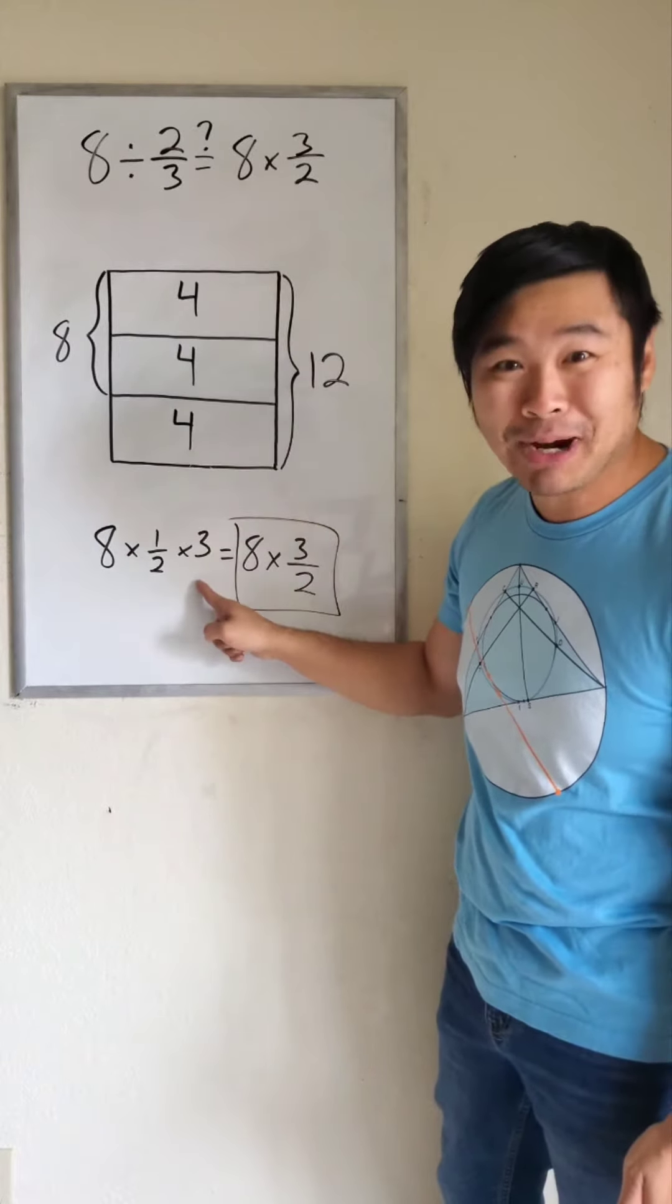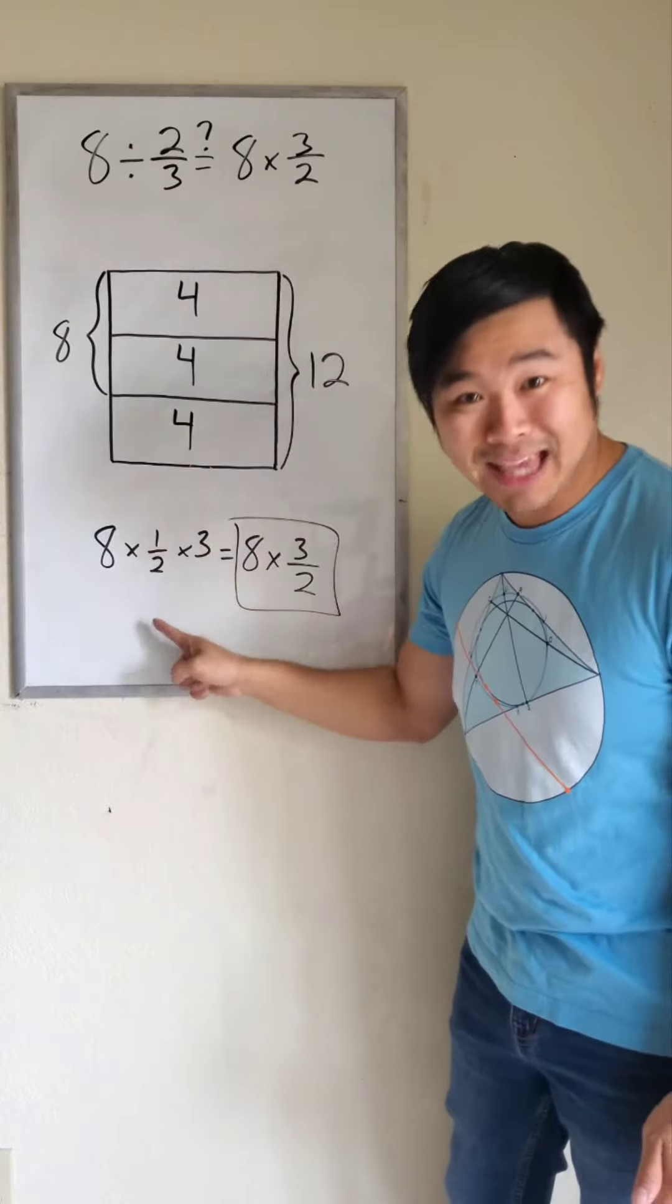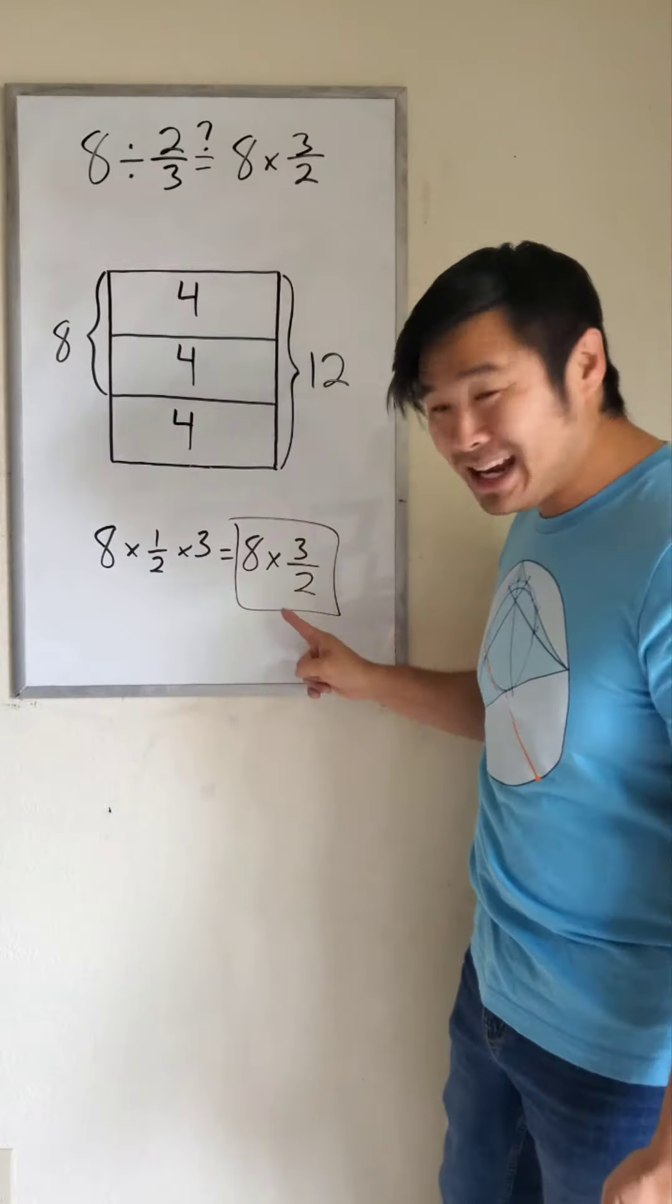so that's why we multiply by 3. So to figure out what the whole is worth, we did 8 times half times 3, or 8 times 3 halves.